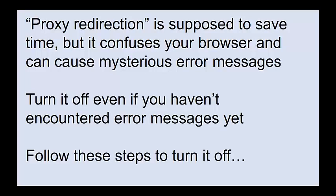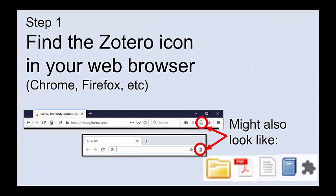Follow these steps to turn it off. Step one: find the Zotero icon in your web browser — your Chrome, Firefox, Safari, etc. Look at the top of your web browser. You should see the Zotero icon near the place where you type in the URL or the web address. Sometimes it looks like a rectangle with a line at the bottom, sometimes it looks like a Z. It might also look like a folder, the PDF icon, a piece of paper, or a book. Or if you have a lot of extensions, it might look like a puzzle piece.